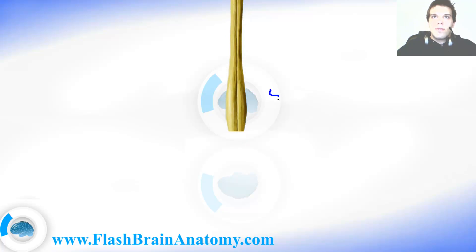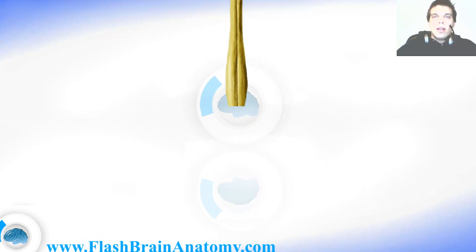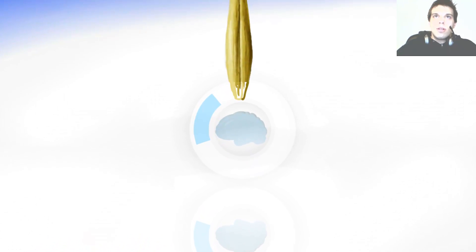The lumbar part consists of 5 segments. Up there we had 12 on the thoracic spine. After that comes the sacral part and the coccygeal part.